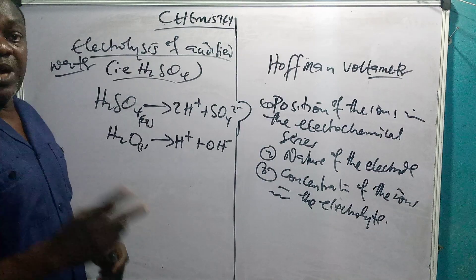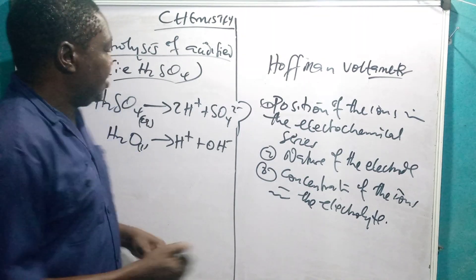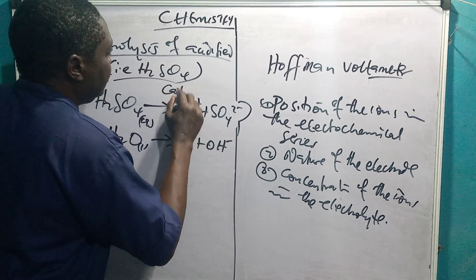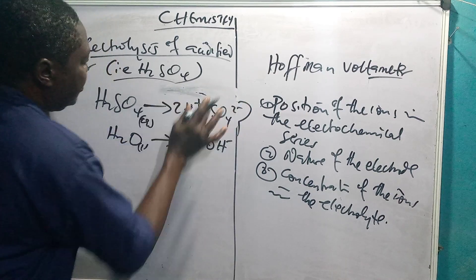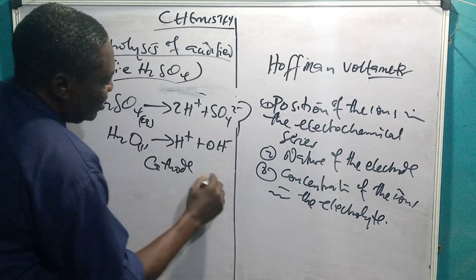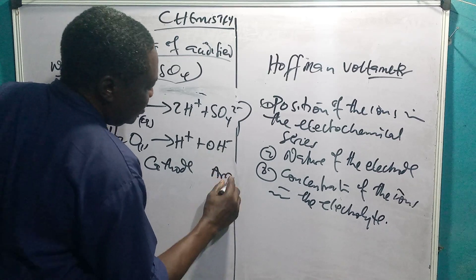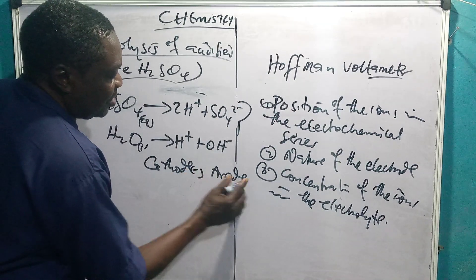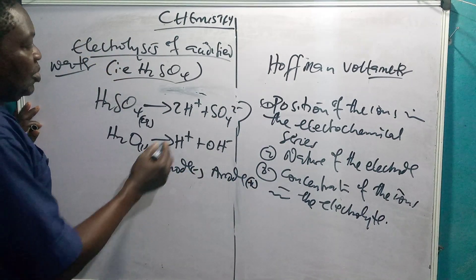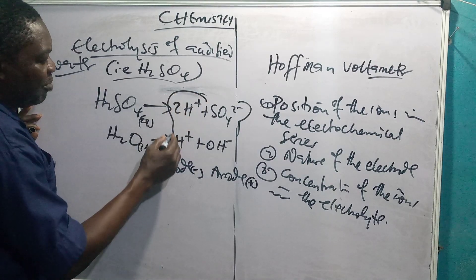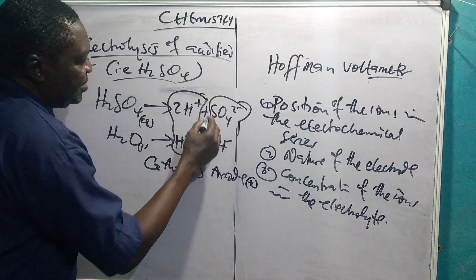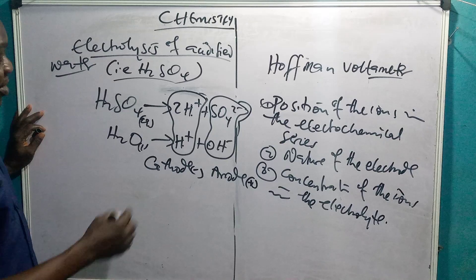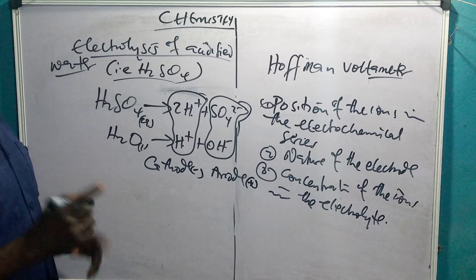Remember, we also said again that you have two poles, the cathode and the anode. You have the cathode and you have the anode. Now, the cathode is usually a negative electrode. So you put negative here and the anode is a positive electrode. You can see these two are positive charges. They are positive ions and these are negative charges.